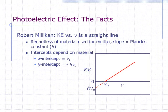This is the equation of the line. If we compare this with y equals mx plus b, we can identify KE as y, ν as x, h as the slope, and negative h times ν₀ as the y-intercept. The equation can also be written this way.